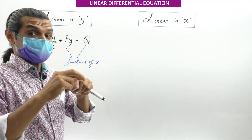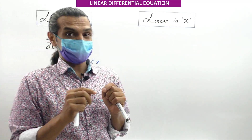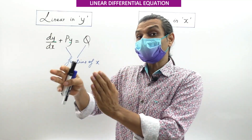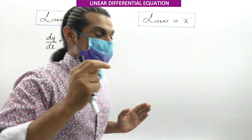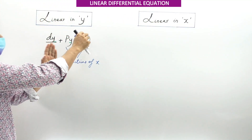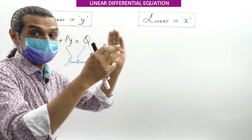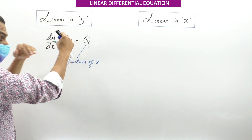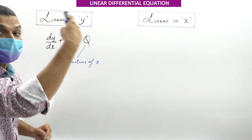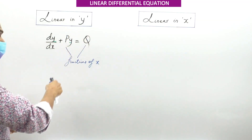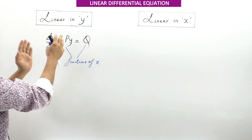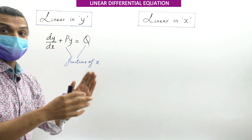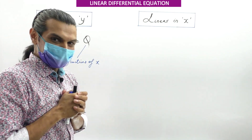We have also studied exact differential equations, where the general form is M dx + N dy = 0. Notice the difference here — in the linear form, the right-hand side cannot be zero; there is something on the right-hand side. So Linear in Y means: DY/DX + PY = Q, where P and Q are both functions of X.